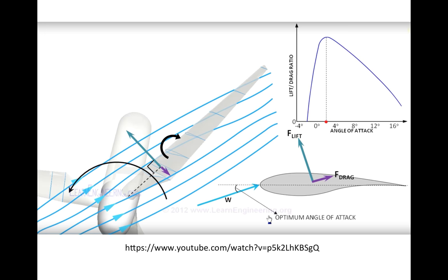In reality, the turbine blade is not stationary — it rotates, so it has a velocity. The wind also has a velocity. If the blade is stationary, the relative velocity between the blade and the wind is just the wind velocity. But if the blade is actually rotating and has a velocity, we have to calculate the relative speed between the wind and the rotating blade. Because velocity is a vector, the relative velocity can be obtained from the vector subtraction of wind velocity and blade velocity, following the parallelogram law.